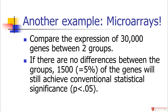Another place this comes up a lot is microarray analyses and high-throughput genomics. When you do a microarray, you might compare two groups — like cancer versus control — while comparing the expression of 30,000 genes. If there are actually no differences and you set significance at 0.05, then 5% of 30,000 — that's 1,500 genes — will achieve statistical significance purely by chance. Many early microarray studies were later believed to be false positives. We had to change how we analyze microarray data to account for this.